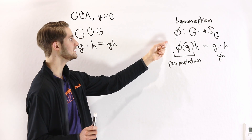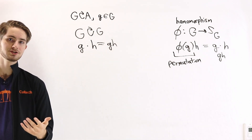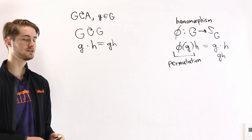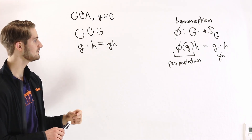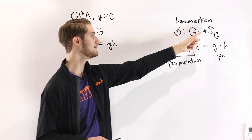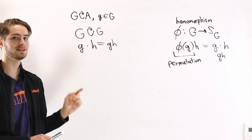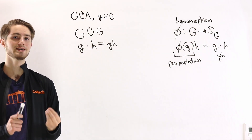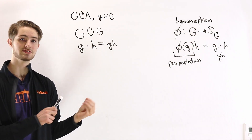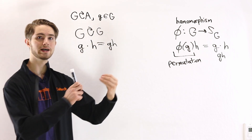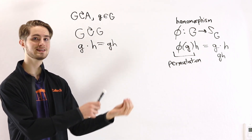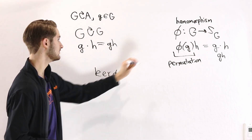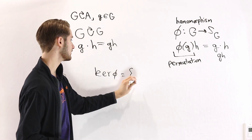We know that φ is a homomorphism. One question we could ask is: what is the kernel of φ? The kernel of a homomorphism is by definition the set of elements in the first group that get mapped to the identity element in the second group. The identity element in the symmetric group is the identity permutation — the element where if we apply it to anything, we just get the same element back.